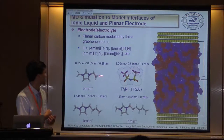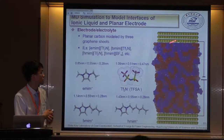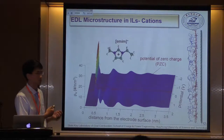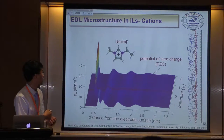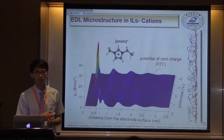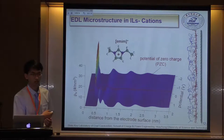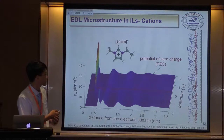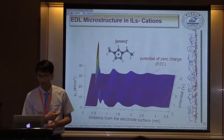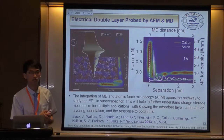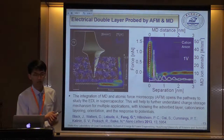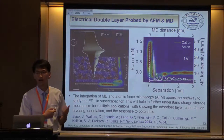We model different types of ionic liquids near the planar carbon electrode, modeled as three graphene layers. From this modeling, we obtain properties such as how ionic liquid distributes near the electrode. The layering of ionic liquid ions is consistent with previous results. As the electrode becomes more negatively charged, the first peak of the cation density profile increases. Once we obtain such detailed microstructural information, we can compare MD simulation results with experimental results obtained by atomic force microscopy.